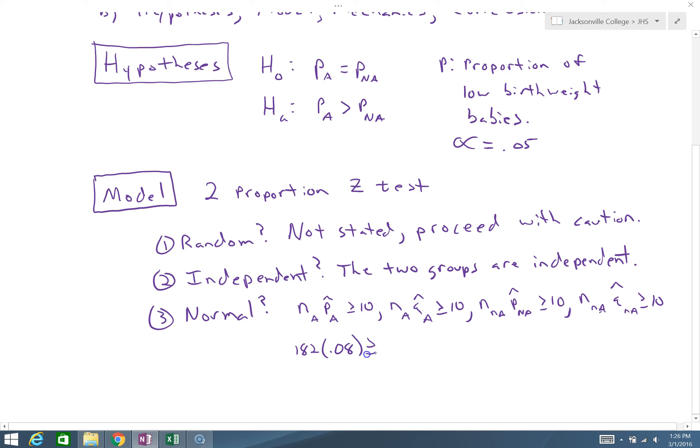It's 182 times 0.08. Is that greater than 10? Well, that's approximately 16, actually I think it's closer to 15, but let's just call it 16. Is it greater than or equal to 10? So that holds, and it's the smallest of the four values, so the rest of them are going to be greater as well. Smallest of the four quantities. So that's our normal condition.